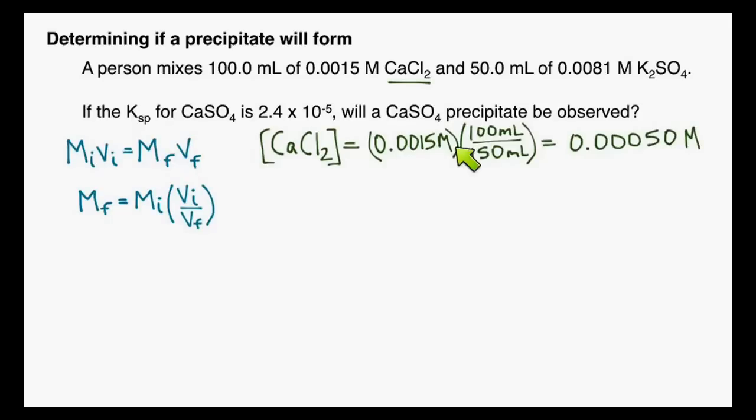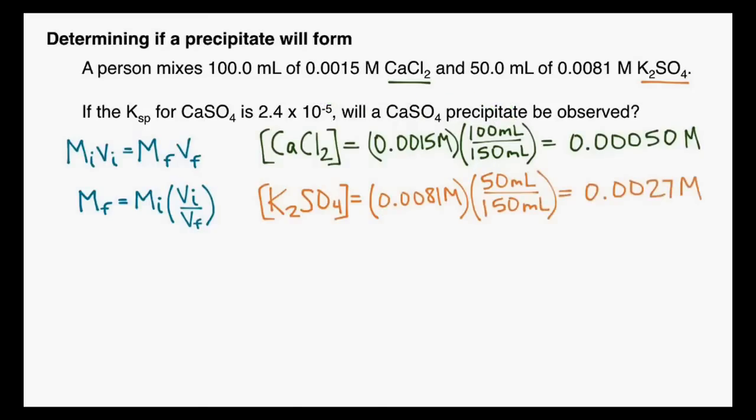We're going to do the exact same thing for potassium sulfate. Our concentration of potassium sulfate is going to be our initial concentration, 0.0081 molar, times the ratio of the volumes. In this case, we started with 50 milliliters, and now there will be a total volume of 150. In other words, one-third of our original molarity will be our new molarity.